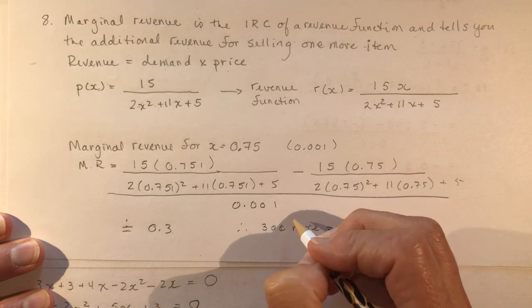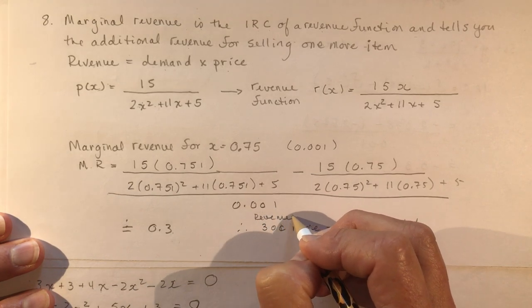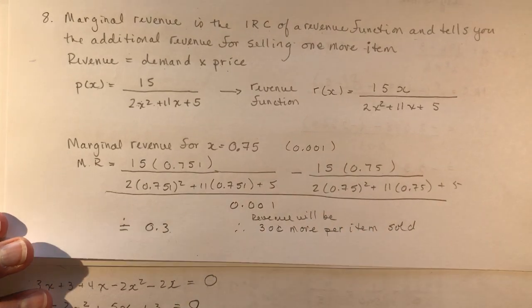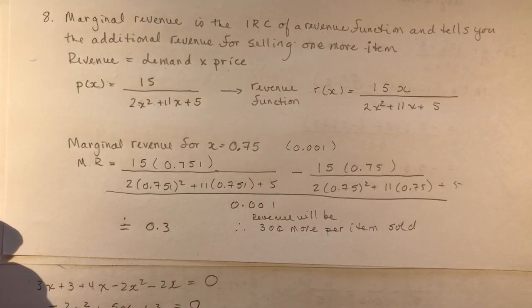Therefore, 30 cents more per item sold. I probably should have said revenue here. Revenue will be. So that's what marginal revenue is, and I hope that helps you out.